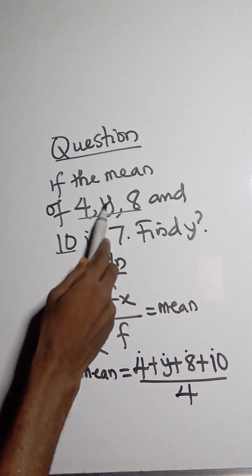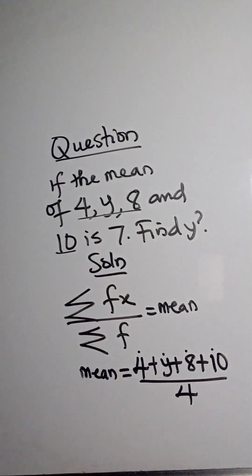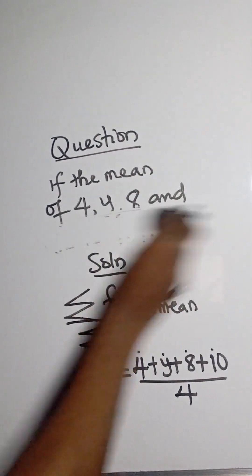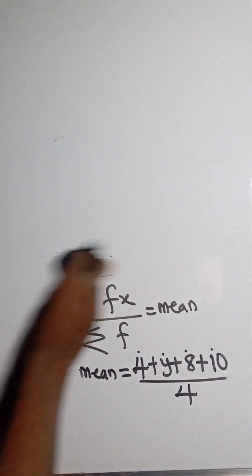So we have 1, 2, 3, 4 numbers. But this summation that we have is equal to 7. The question says it is equal to 7.